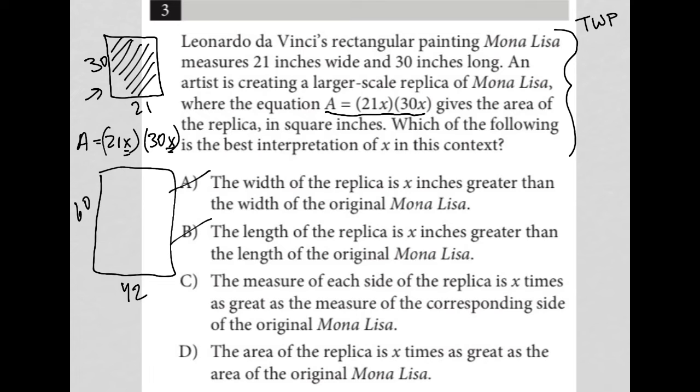Choice C: The measure of each side of the replica is X times as great as the measure of the corresponding side of the original Mona Lisa. I like that. And then choice D: